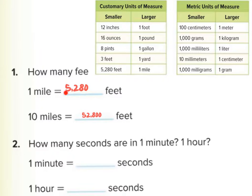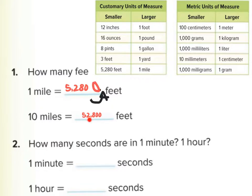Notice that in 5,280, when we multiply by 10, the decimal moves over one place and we fit a zero in — so it becomes 52,800. The comma also shifts every three place values. It essentially adopts the zero from the 10.